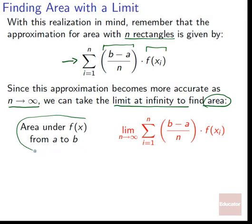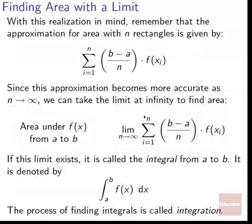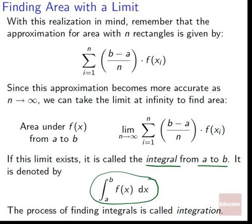With this realization, the area under f(x) from a to b is the limit as n goes to infinity of the sum from i=1 to n of (b−a)/n times f(xi). This approximation becomes more accurate as n goes off to infinity. If this limit exists — and for most functions we're used to, it will — what that limit gives us is called the integral, denoted as the integral from a to b of f(x) dx. The process of finding integrals is called integration.